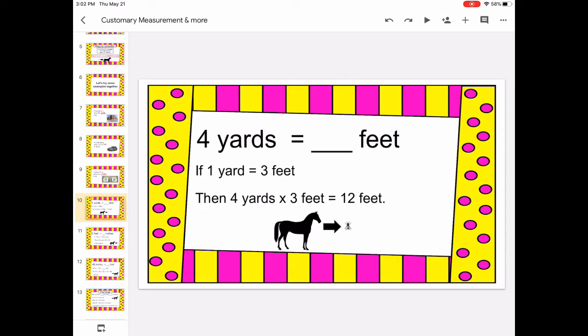It's times three because there are three feet in a yard. So then four yards times three feet equals 12 feet because we're going from a larger unit to a smaller unit. Horse to fly and multiply.